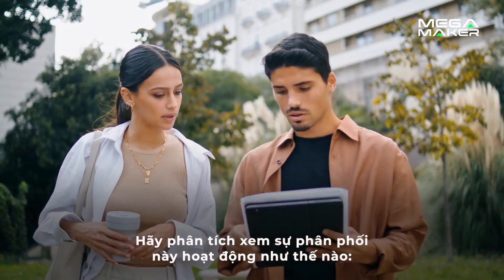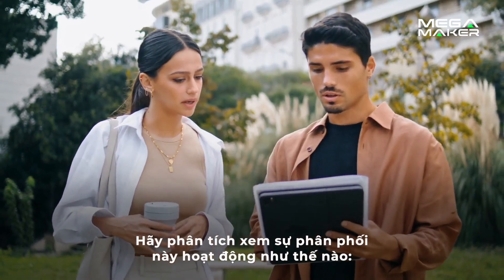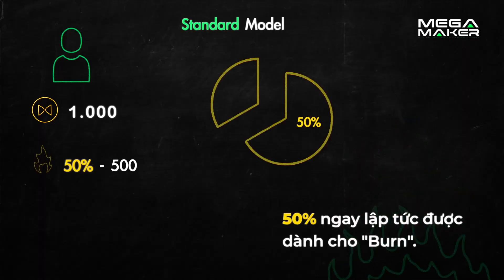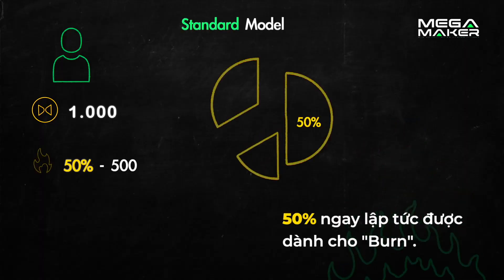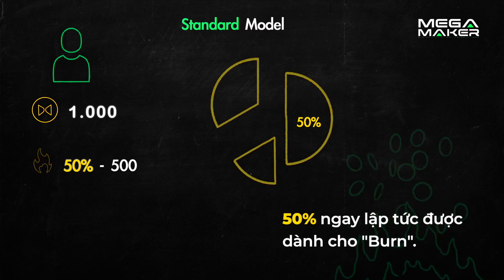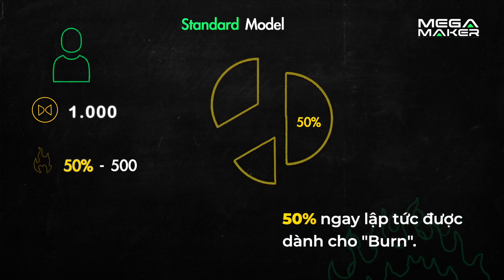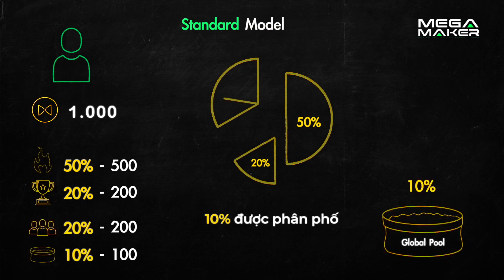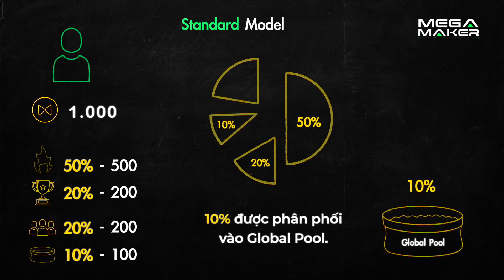Let's examine how this distribution works in the standard model. From 100% of the contributed value, 50% are immediately allocated to burn, 20% return to the rewards pool, 10% are distributed in the global pool, and the remaining 20% are allocated to the affiliate program.